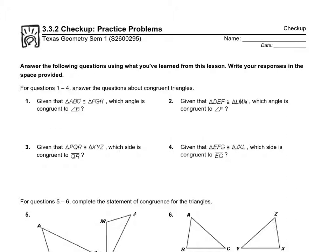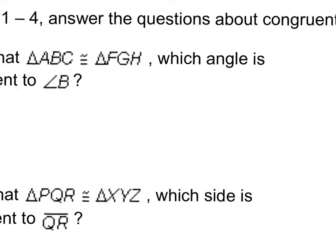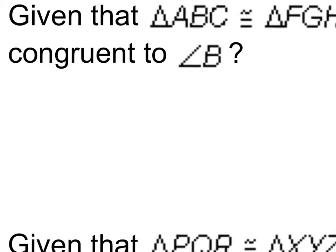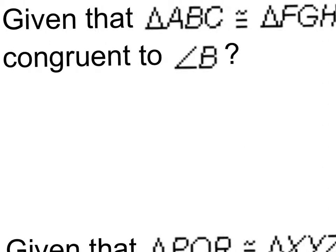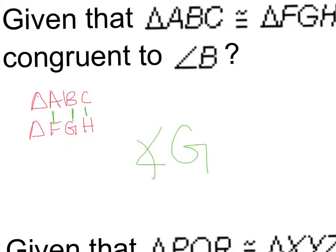For the checkup, questions one through four: given that triangle ABC is congruent to triangle FGH, which angle is congruent to angle B? Remember, the order of the letters makes a huge difference. I'm going to write the triangles on top of each other — triangle ABC and triangle FGH. A and F represent the same point, B and G the same corner, and C and H the same vertex. So what angle is congruent to angle B? The answer is angle G, because they're both the middle letter.